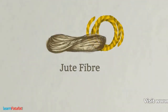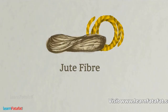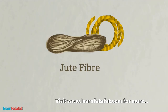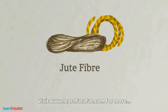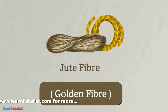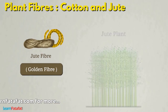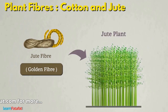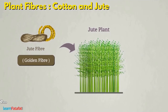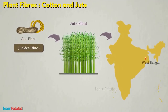Jute fiber is a soft and long natural fiber. As it has a golden and silky shine, it is also called golden fiber. It is obtained from the jute plant. Jute plants are grown mainly in the fields of West Bengal, Bihar, and Assam.